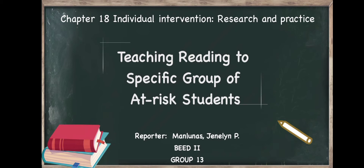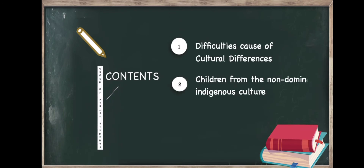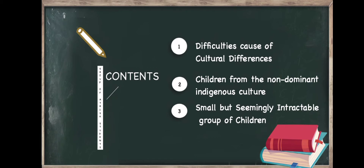And now, finally, we are moving on to the last topic of this chapter, wherein I'll discuss about teaching reading to students who may be at risk of reading difficulties because of cultural differences — like children whose first language is not English on school entry, or who do not belong to the dominant culture serviced by the school system. My report will cover three main points: difficulties caused by cultural differences; children who may be at risk from the non-dominant indigenous culture; and the third group of children who are small but seemingly intractable.